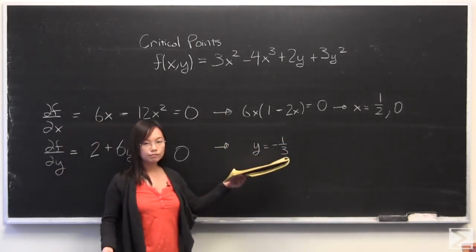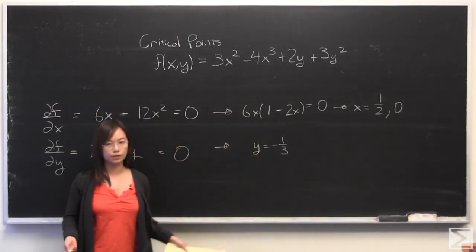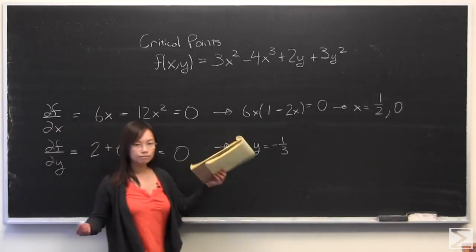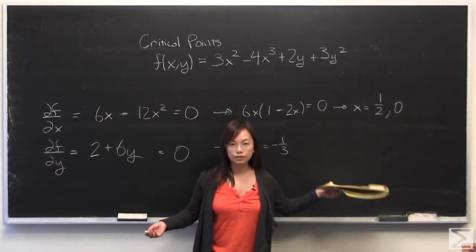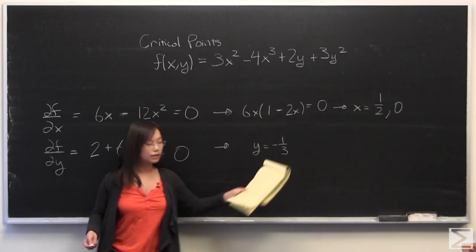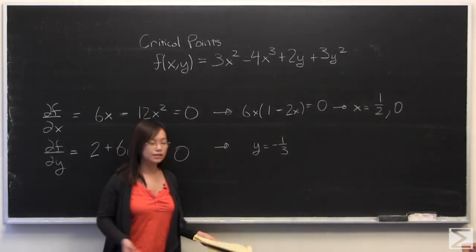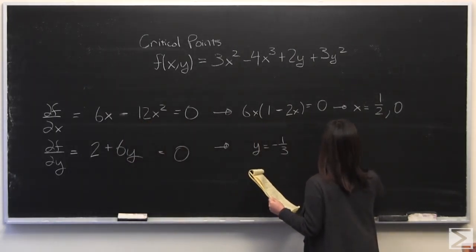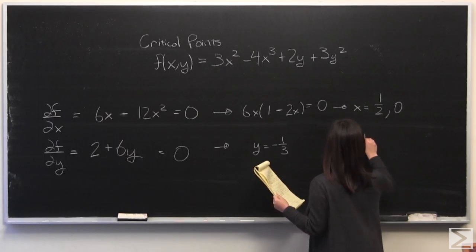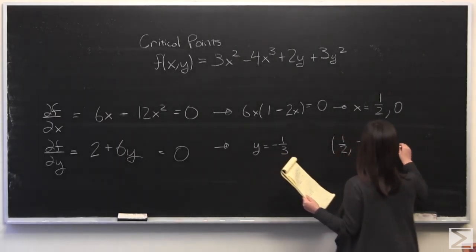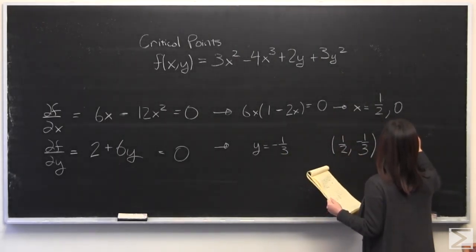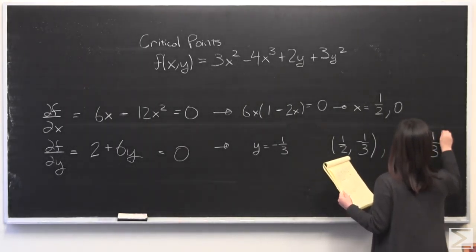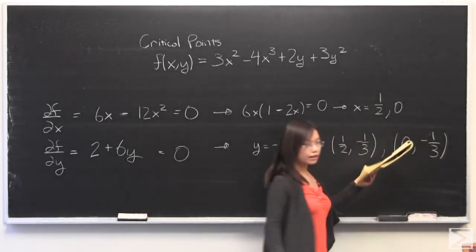So x and y: y is equal to negative 1 third, and that makes this true. If x is equal to 1 half, or x is equal to 0, then this is true. So we do have our two critical points: (1/2, -1/3) and (0, -1/3).